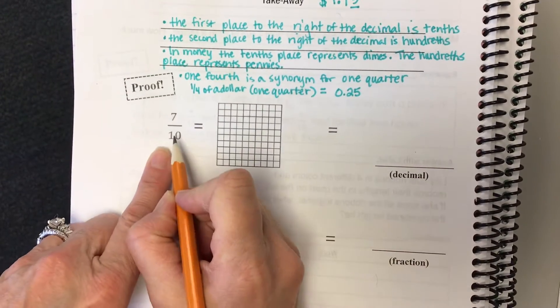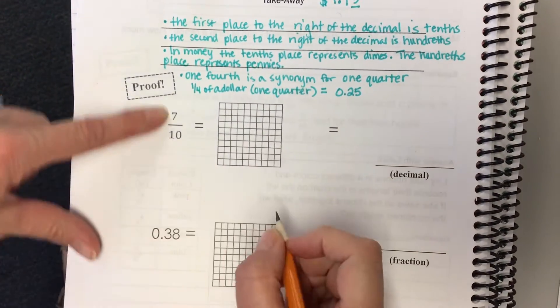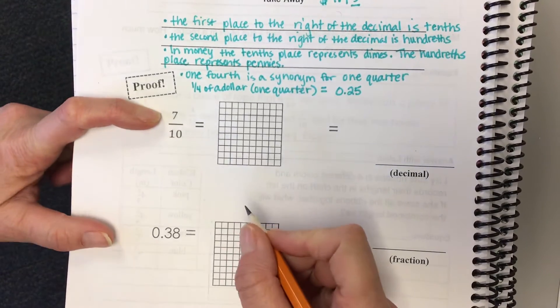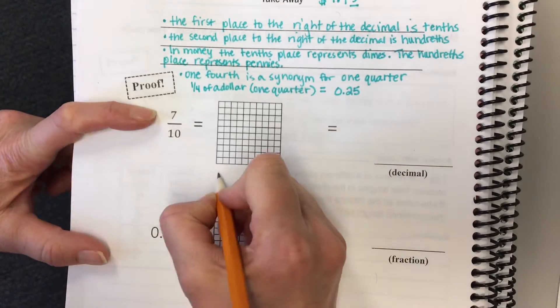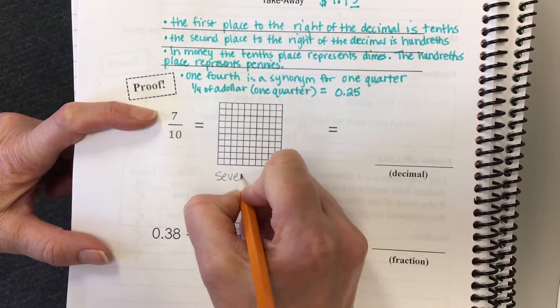So when we look at this, the fraction is what? How do we say this fraction? Tell me the word form. Everybody should have written it. Ada.